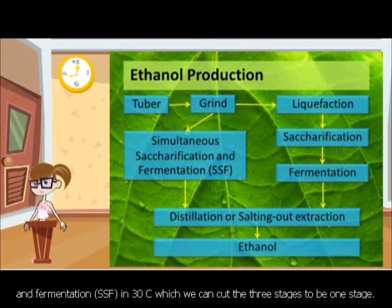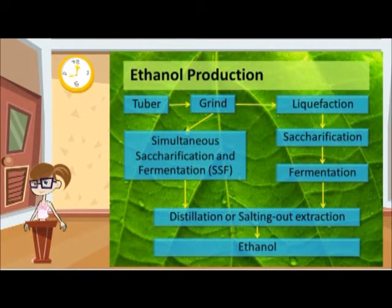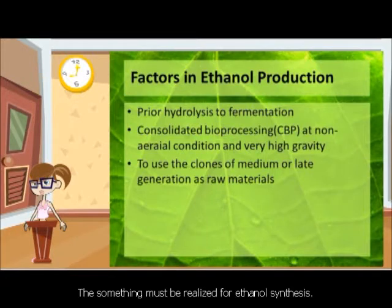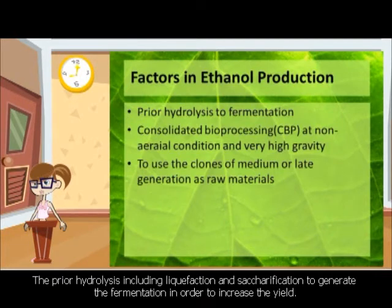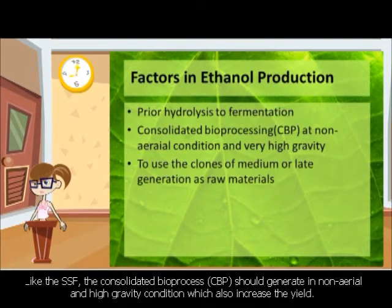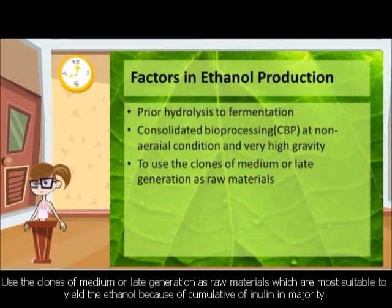Some important points for ethanol synthesis: Number 1, prior hydrolysis including liquefaction and saccharification before fermentation increases yield. Number 2, like SSF, consolidated bioprocess (CBP) should be conducted under anaerobic and high-gravity conditions, which also increases yield. Number 3, use clones of medium or late generation as raw materials, which are most suitable for ethanol yield due to cumulative inulin content.